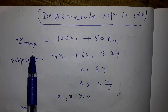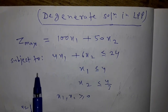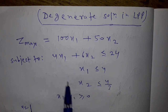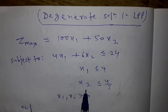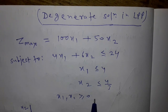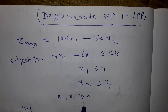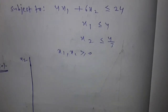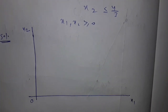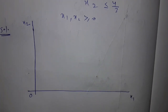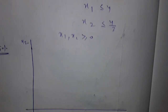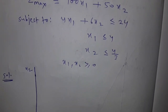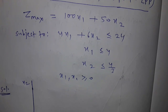The problem is: Z max is equal to 100x1 plus 50x2, subject to certain constraints. Only x1 and x2 are given, and all the constraints are of the less-than-or-equal-to type.